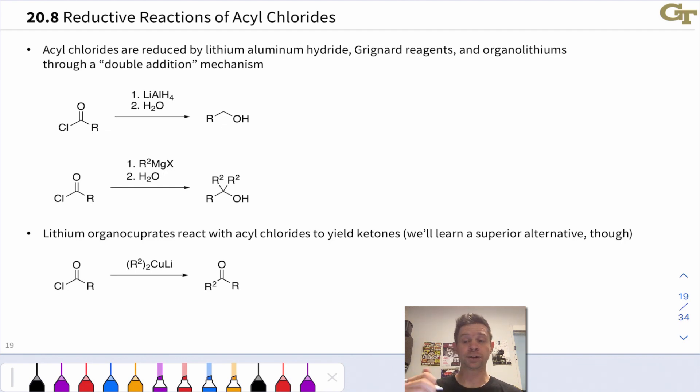We can treat an acyl chloride with lithium aluminum hydride, a very strong reducing agent. This is an extremely favorable reaction because we've got a very electrophilic substrate reacting with a very nucleophilic reagent. Recall here that LiAlH4 supplies nucleophilic hydrogen, H- quote-unquote.